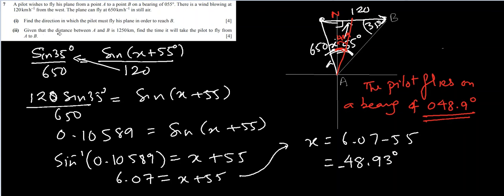Part b, it is given that the distance between A and B is 1250 kilometers, this distance now. The other distances, other numbers we written are velocity, so let's not mix up. This is kilometer, this is distance. I'll redraw the drawing. Find the time it will take to fly from A to B. So time we know is distance over velocity. So distance is given to us, we just need to find what is the velocity in this direction AB.